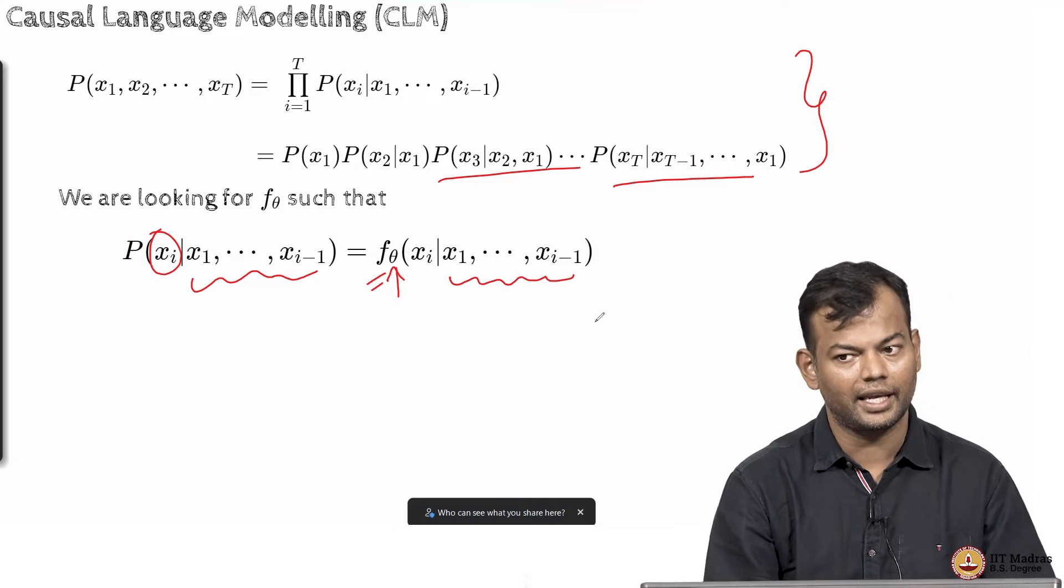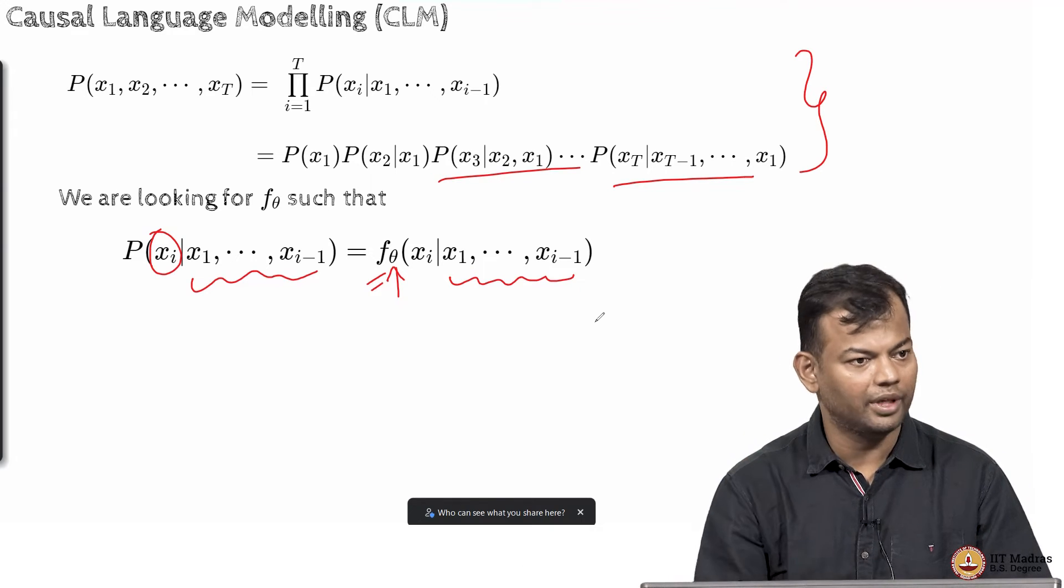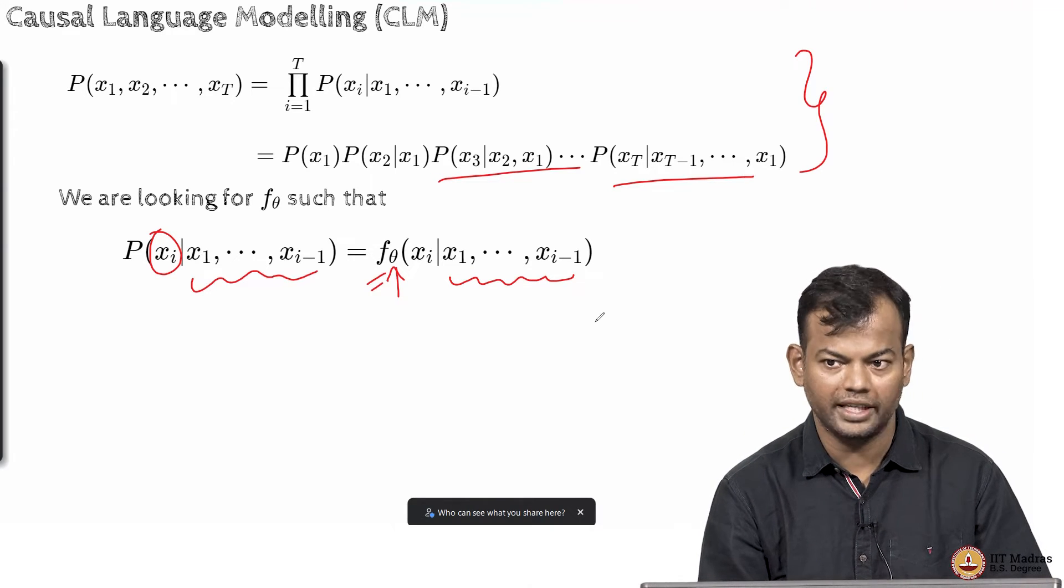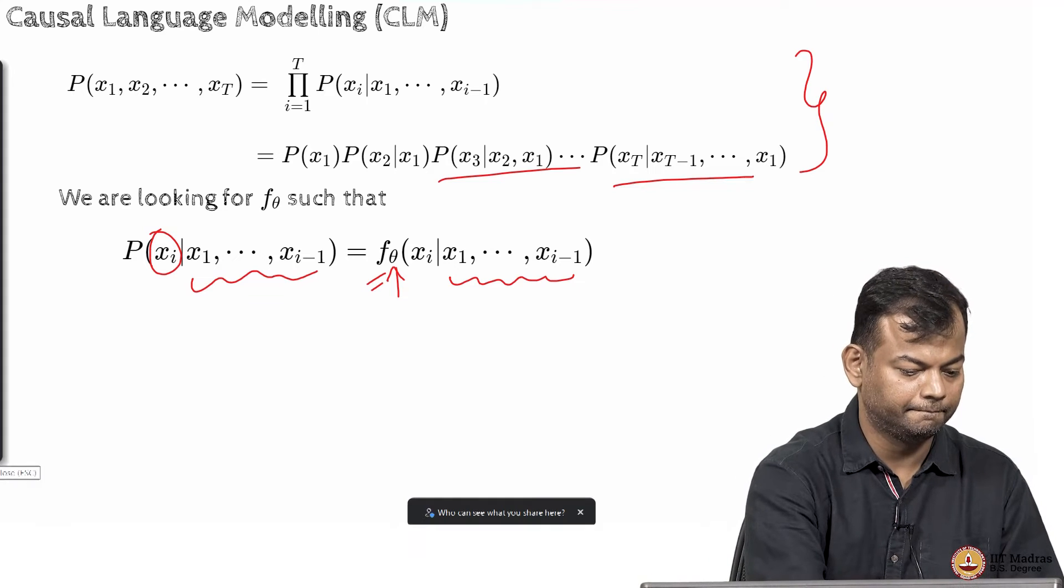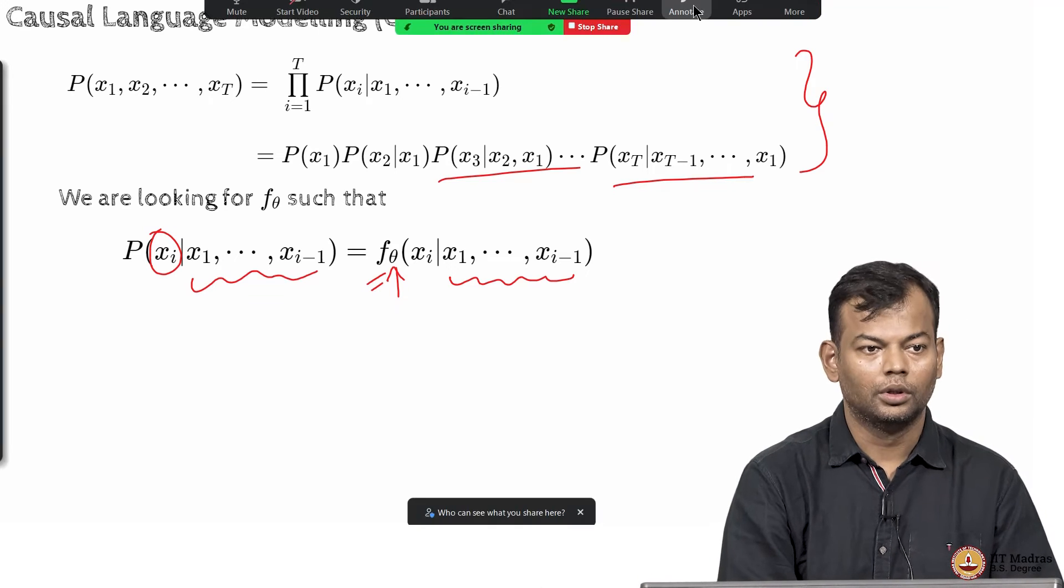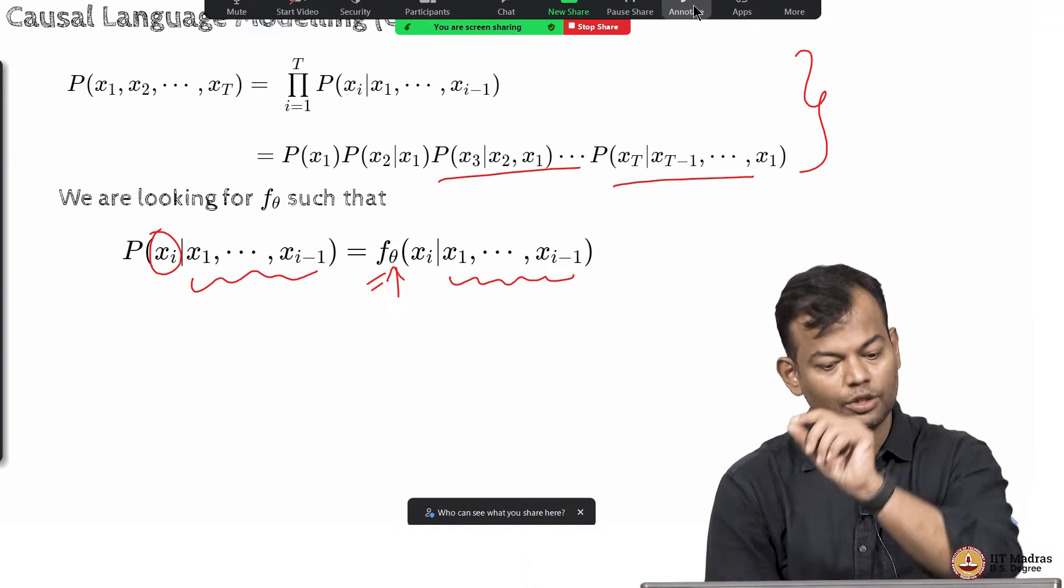It will take x1 to xi minus 1 as input and give me a probability distribution. Yes? Okay? Just one minute. No. It will give a probability of the next token.